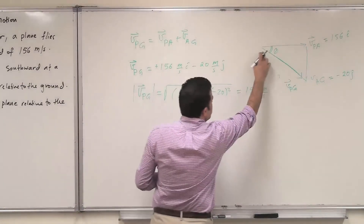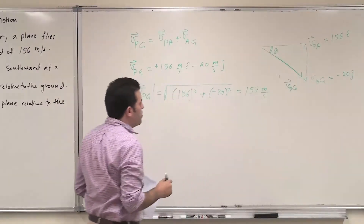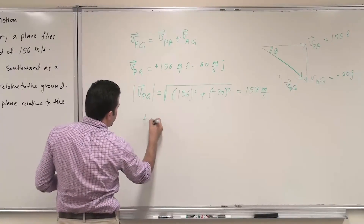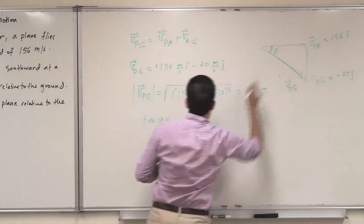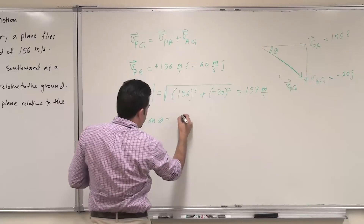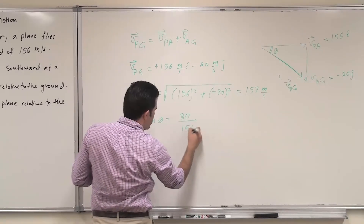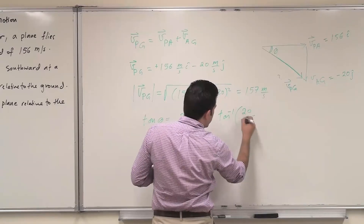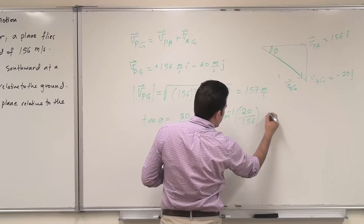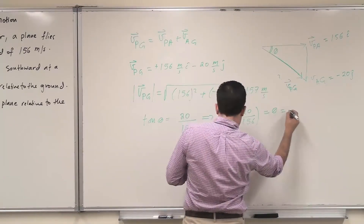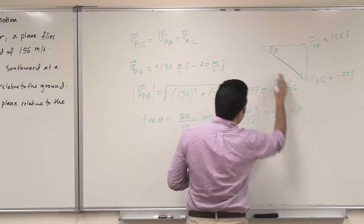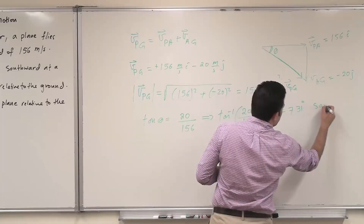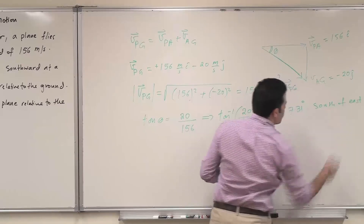To find the direction, we use trigonometry: tan theta equals 20 divided by 156, so theta equals tan inverse of 20 divided by 156, which gives theta equal to 7.31 degrees south of east. So the velocity of the plane relative to the ground is 157 meters per second at 7.31 degrees south of east.